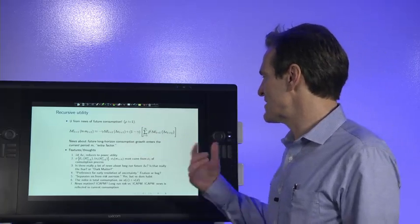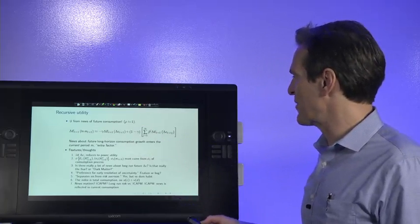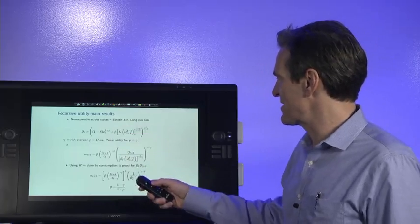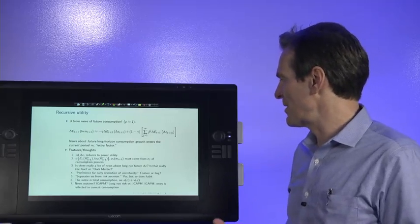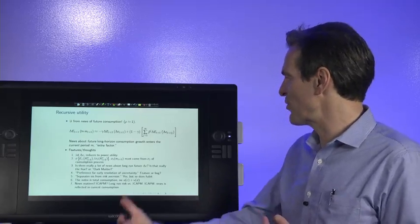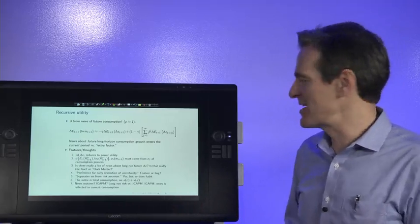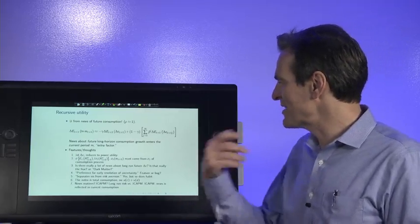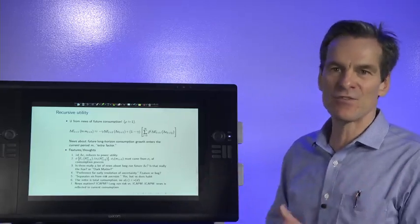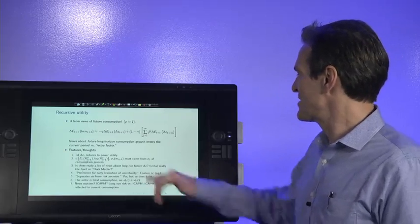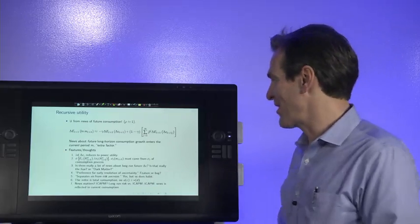The preferences came out of the theory literature, and they have a feature in them. People care to learn about uncertainty, the preference for early resolution of uncertainty. You care, you're willing to pay money to find out what's going to happen to you, even though you can't do anything about it. And you can decide if you think that's a feature or a bug of these preferences.